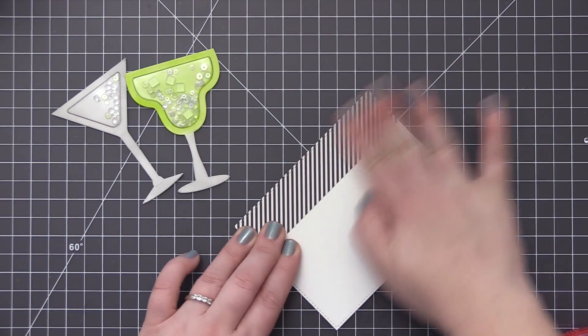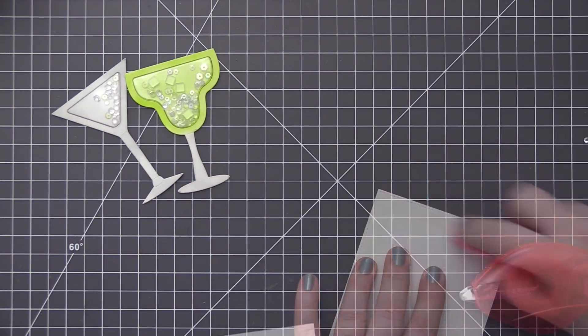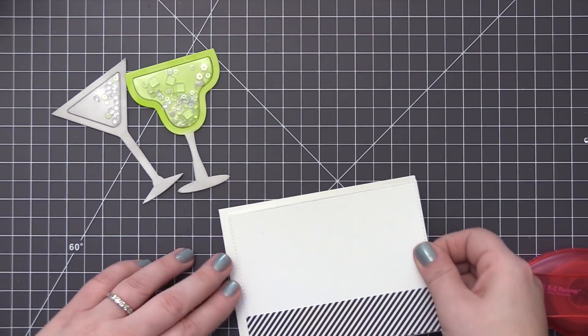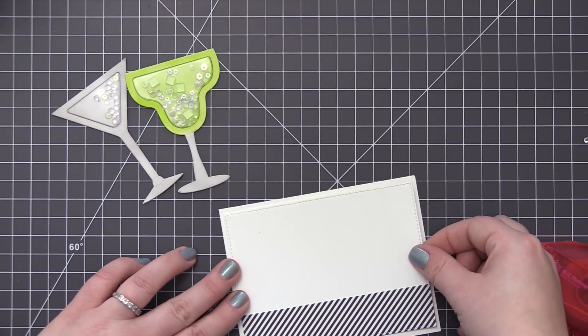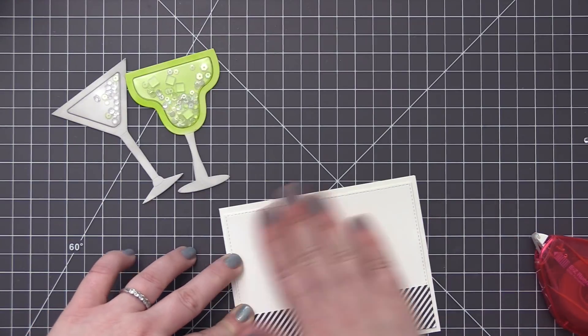I added the stripe piece of pattern paper directly to that white panel and I'm going to add this completed panel to our card base. This card base is a top folding four and a quarter by five and a half inch card and we're going to have a little bit of a white border all the way around the panel that we're adding to the front.